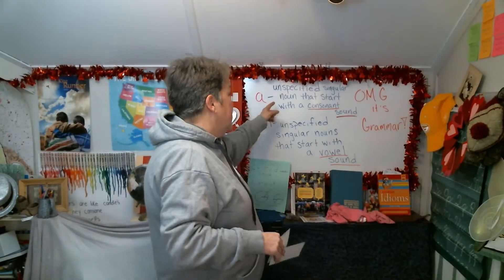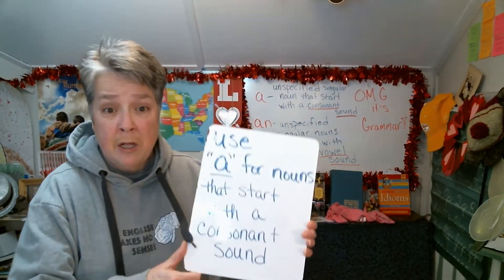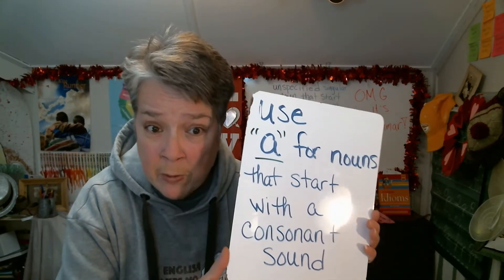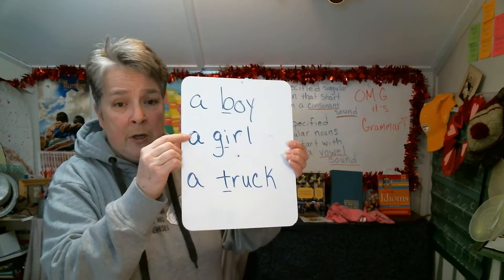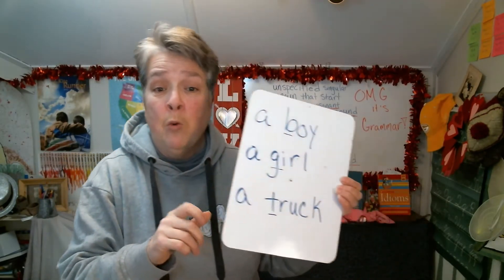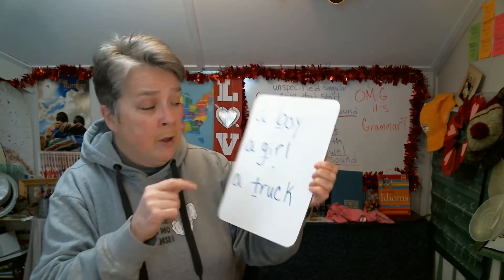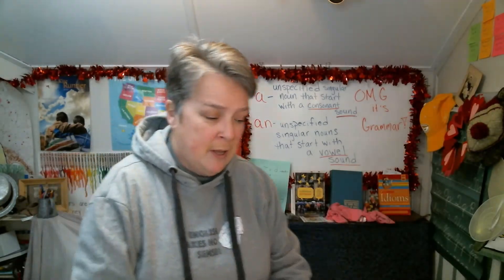We use 'a' for unspecified singular nouns that start with a consonant sound. Use 'a' for nouns that start with a consonant sound. What does that mean? For example: a boy, a girl, a truck. We don't know which boy, which girl, which truck — but 'a truck,' 'a boy,' 'a girl.' B, G, T make the consonant sound.